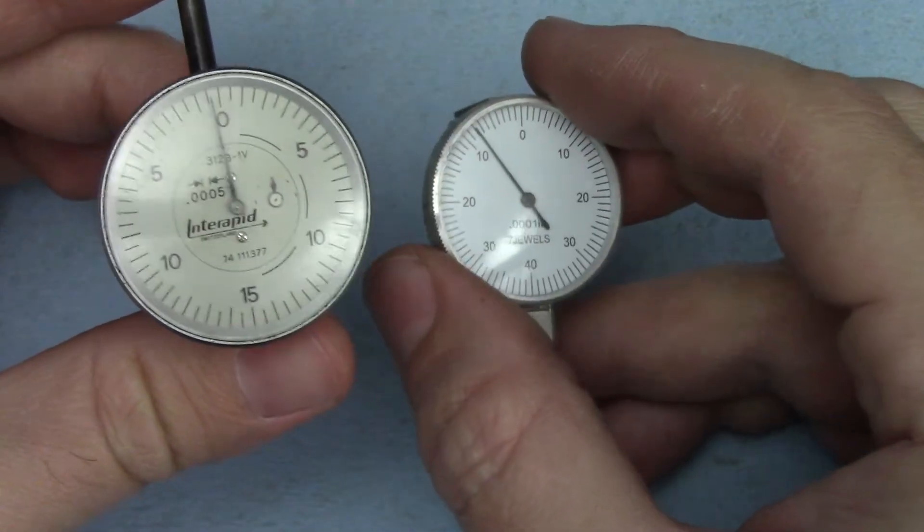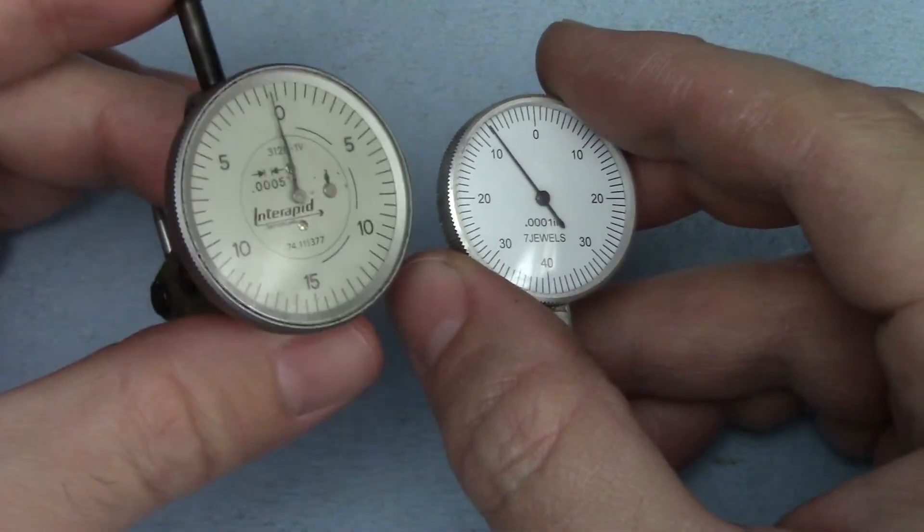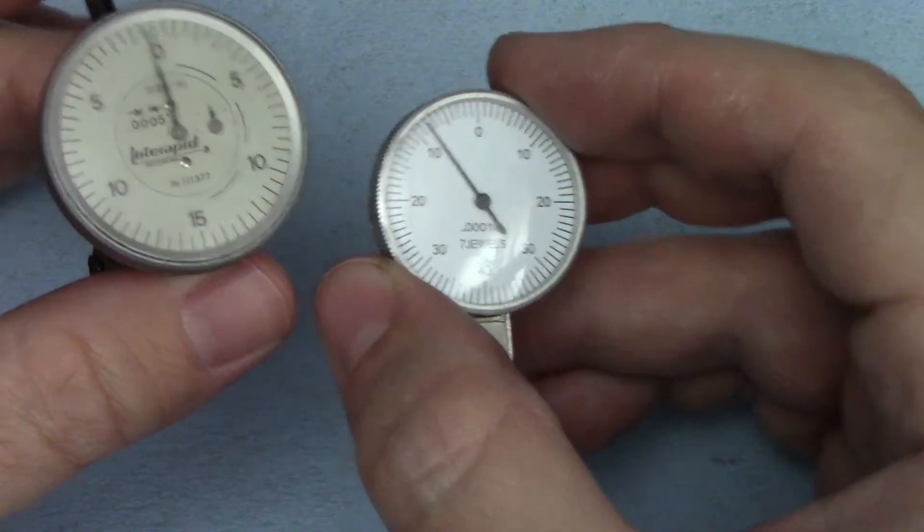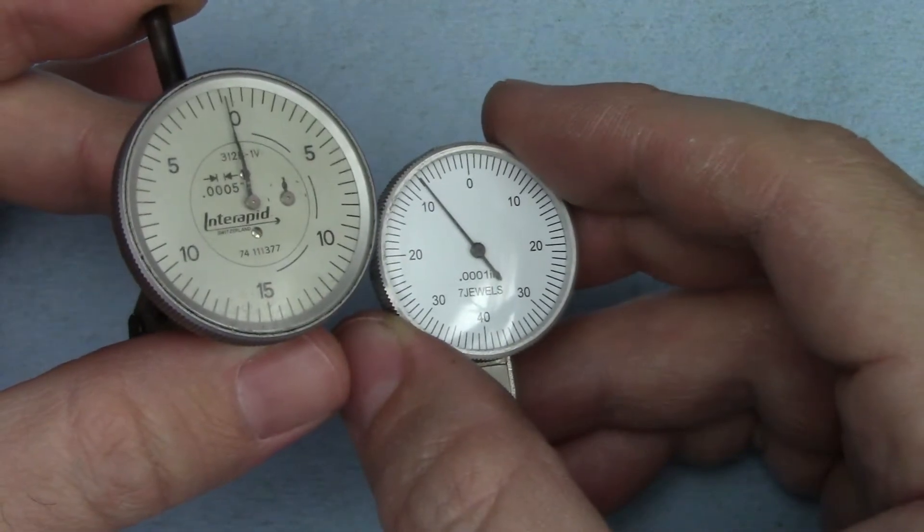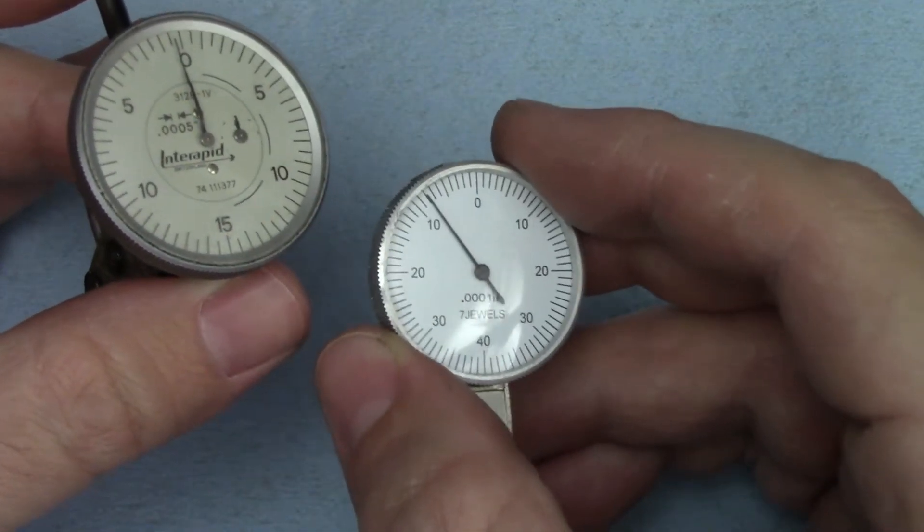This is the type generally used for dialing parts in, and for most of that work, you'll find the coarser graduation is sufficient. Indicators with finer graduations are used more for parts that have been ground for checking squareness and flatness, as well as run out on round parts, but you'll find them way too twitchy on parts that don't have a nice smooth finish.